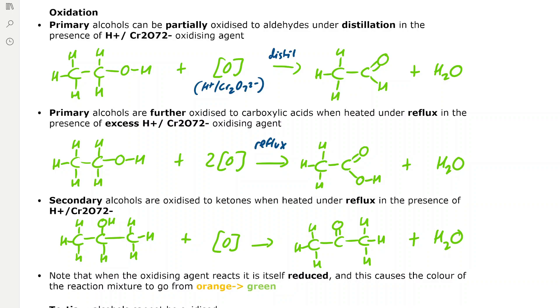Ethanol reacts with the oxidizing agent, which we represent as [O] in square brackets. When we distill it, we form an aldehyde which has a CHO group on the end of the chain, and we also form water as a by-product.